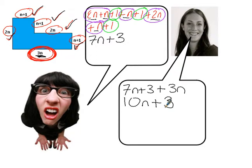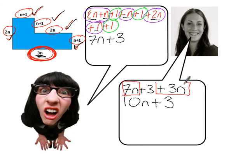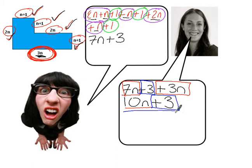Do you know how I got that? No, I don't. Please remind me. OK, so you've got 7n here and you've got plus 3n here. So that gives you your 10n. And then you've got plus 3 here, which gives you this plus 3 here, which gives you your final expression of 10n plus 3. OK? Thanks, Miss Whitehead.